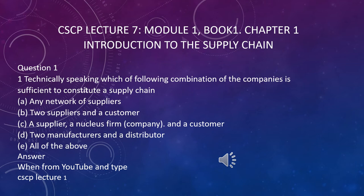The answer is C. You can review it in chapter 1, CSCP lecture 1. Technically, you need three entities to make a supply chain: one supplier, one manufacturer — the middle or nucleus firm — and the customer. Remember this; it is a very important concept.